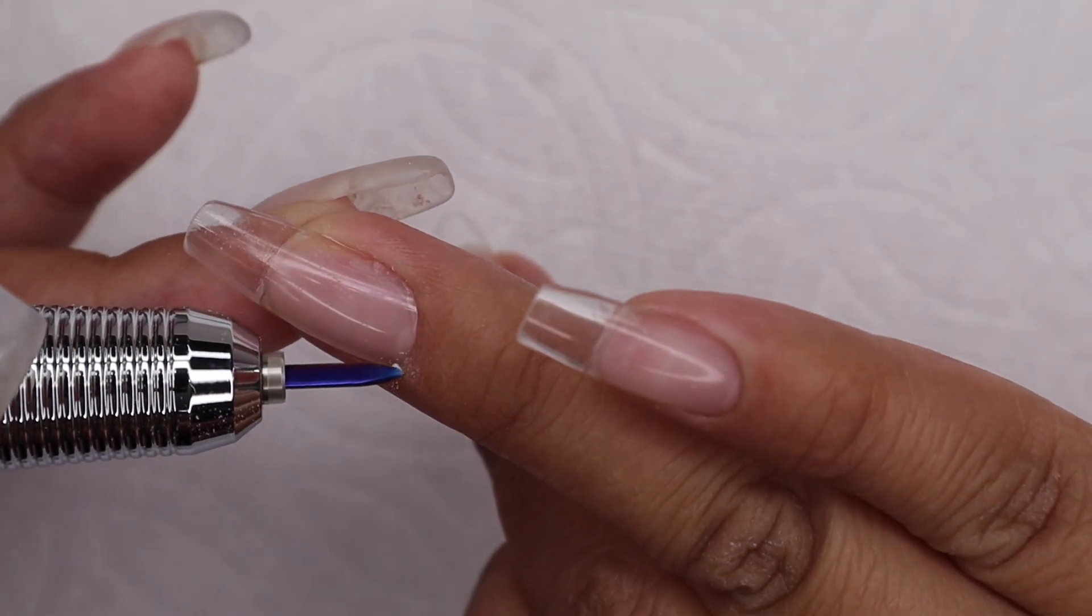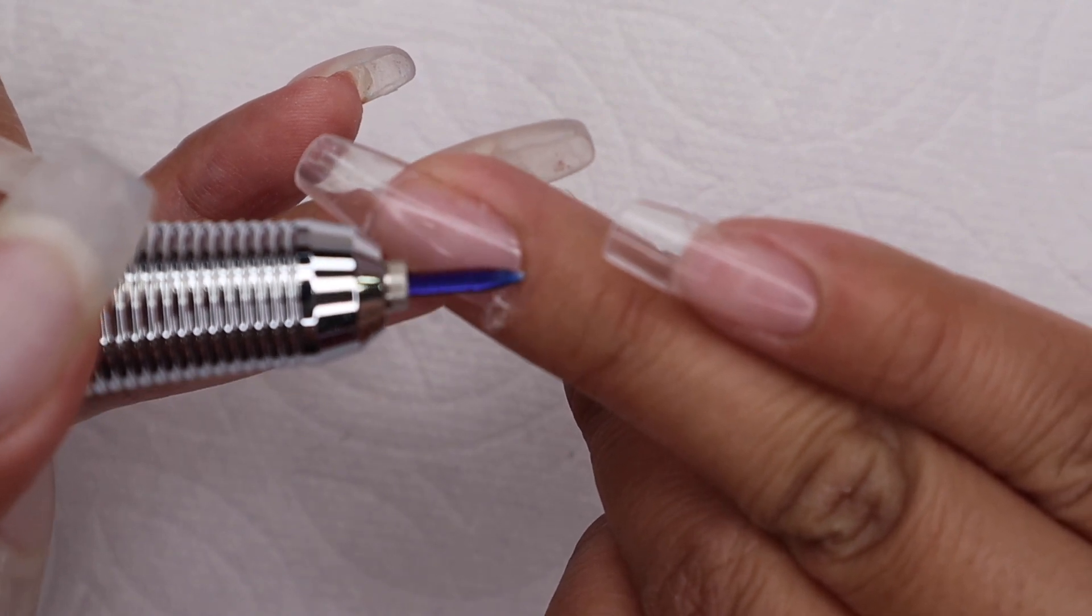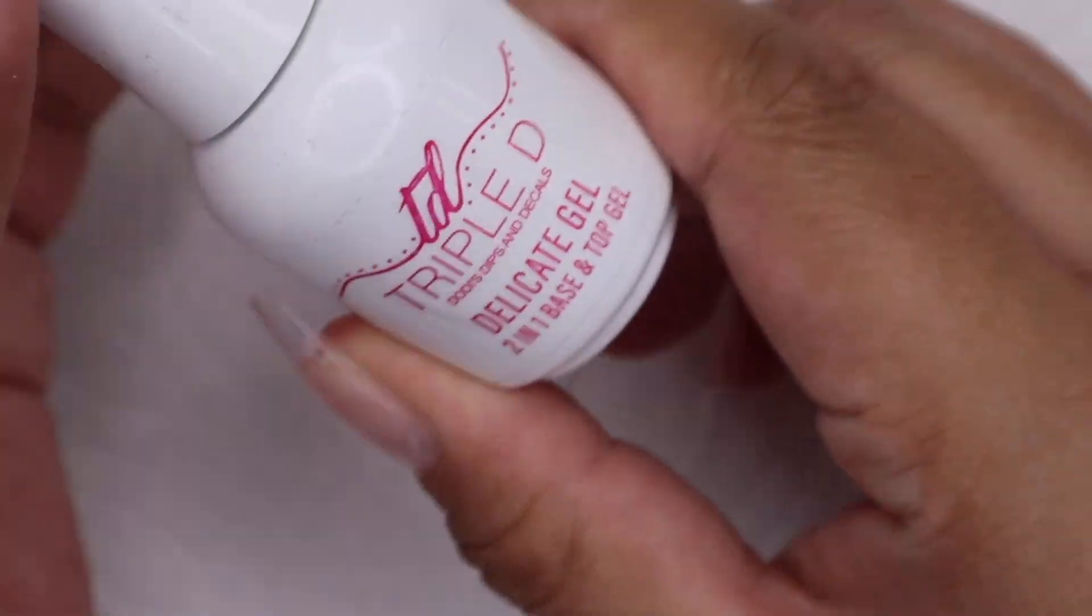For the excess glue on this part, I'm just going to use the e-file and then this bit to clean that up. Then I did not file the surface of my nail.